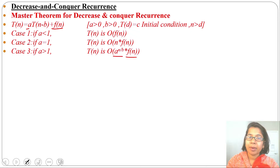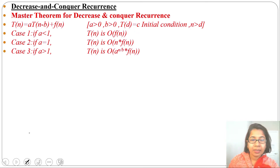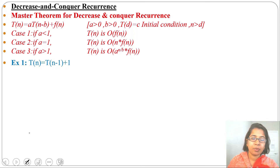Rather than the master theorem, we can also apply the backward substitution method or recursion tree method for decrease and conquer recurrences. Some examples of decrease and conquer recurrences: the first example is T(n) = T(n-1) + 1.